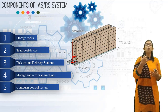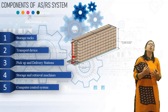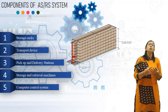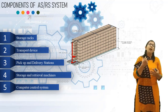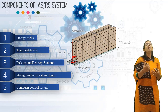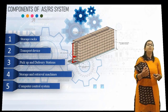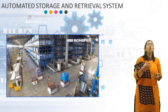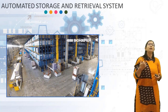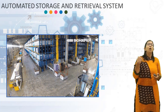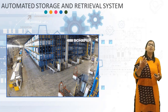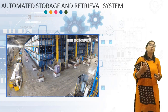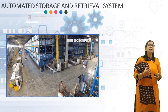The last component of the ASRS system is the Computer Control Unit. The computer control unit performs two functions: first, to control the operation of the system; and second, to store material movement and inventory data. In this diagram, you can see how the automated warehouse works in a Flexible Manufacturing System, including the storage and retrieval system and its different components.